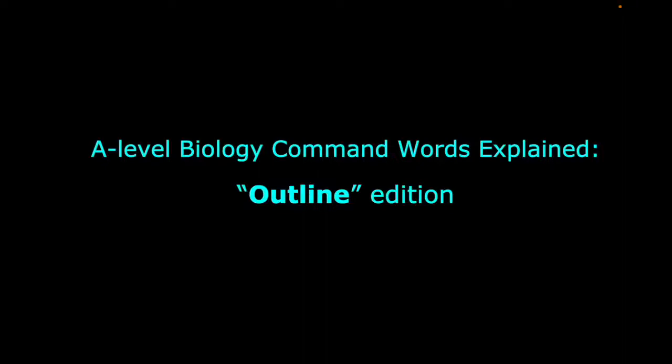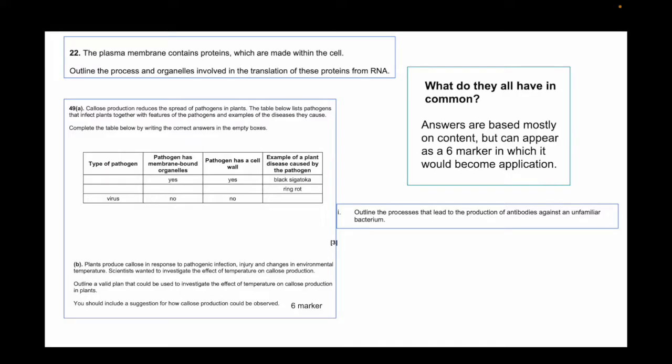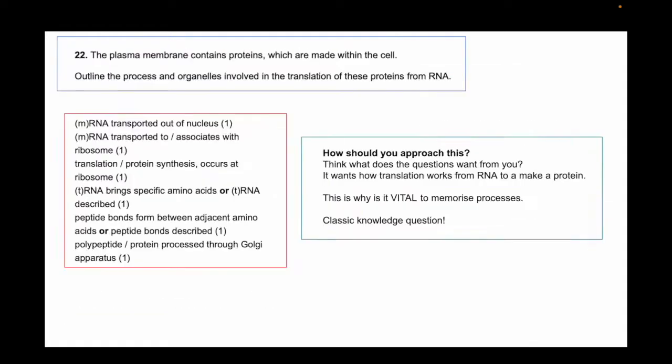Going through outline questions, have a look at these and think to yourself what do they all have in common. Outline questions come as three markers, four markers, sometimes six markers. They come in various different forms. However, the answers are mostly based on content, but when they are six markers, they become application. This is an example of it coming in the form of a content-based answer.